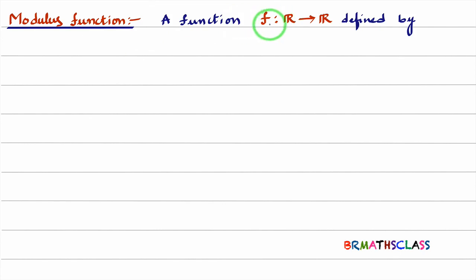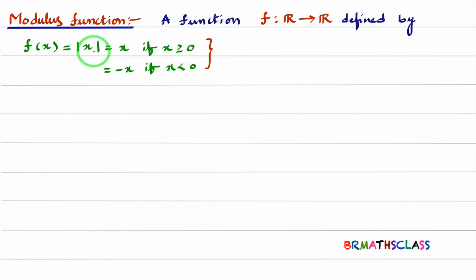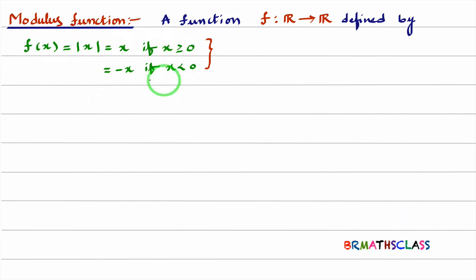A function f from set of all real numbers to real numbers is defined by. The function is from set of all real numbers to real numbers. You observe here, the function is defined like this: f is modulus of x. Modulus of x will be x whenever x is greater than or equal to 0. Modulus of x is minus x when x is less than 0. This is called the modulus function.